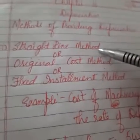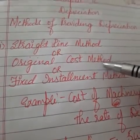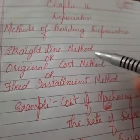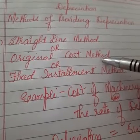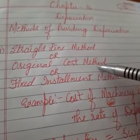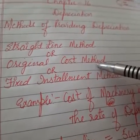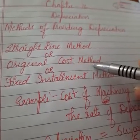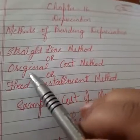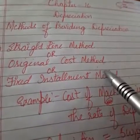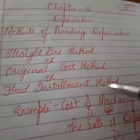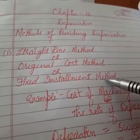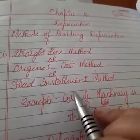In this method we just have to calculate depreciation on the original cost or acquisition cost of an asset. For example, if I have purchased machinery for 5 lakh, then we have to levy the rate of depreciation every year on 5 lakh only. Because it is calculated on the original cost, that is why this is also called the original cost method. Every year we use a fixed amount of depreciation, that is why it is also called the fixed installment method.